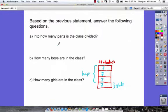So, into how many parts is the class divided? Well, 1, 2, 3, and 4. So it's divided into four parts. And this is a word problem, so we want to be sure we have a label with our answer.